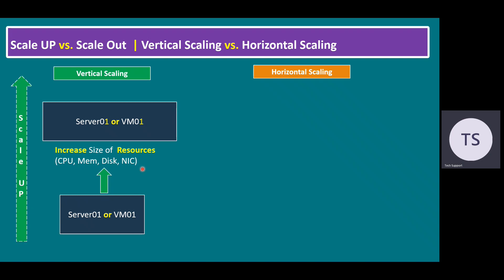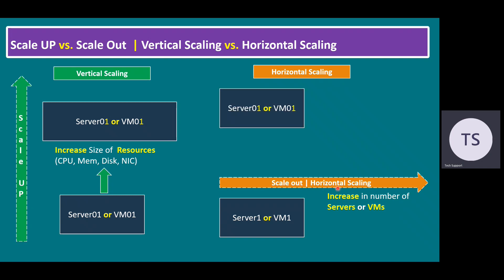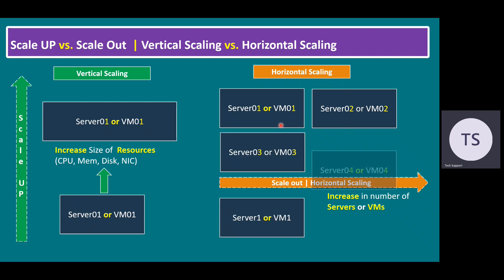When it comes to horizontal scaling, it's not about the same server — we are adding additional servers. That is called horizontal scaling. Let's say I have one server; increasing the number of servers or virtual machines — that is scale-out or horizontal scaling. If we have one server, horizontal scaling means adding additional servers. For easy understanding, I added four servers here, but we can add any number of servers. Horizontal scaling means adding additional instances.